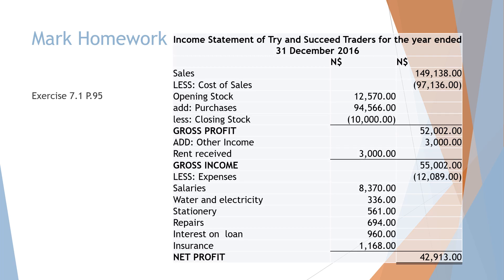Now let's look at the different calculations that you need to do for the income statement. The first one is the calculation for cost of sales, which is opening stock plus purchases less closing stock. After this you have to do the calculation of gross profit, which is one of the main calculations: sales less cost of sales.